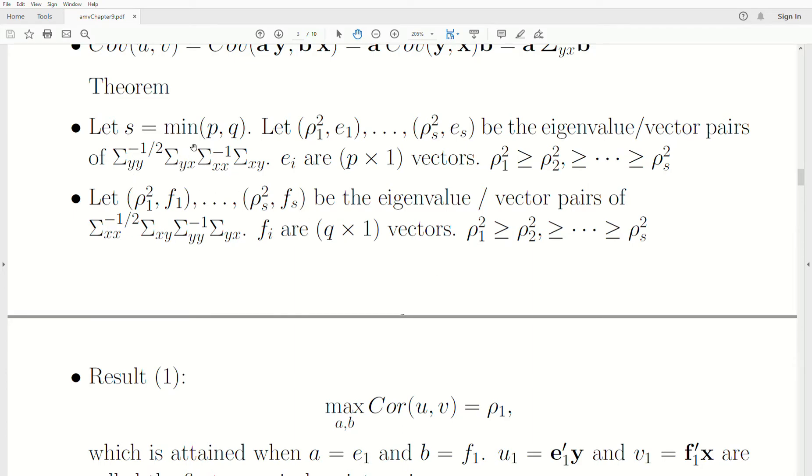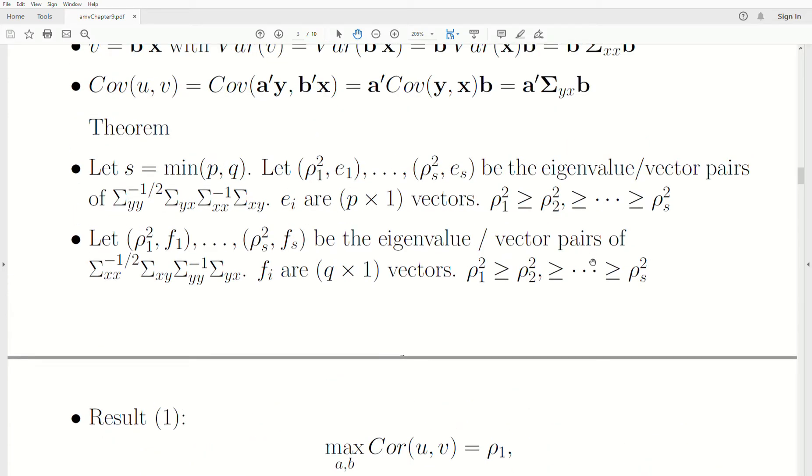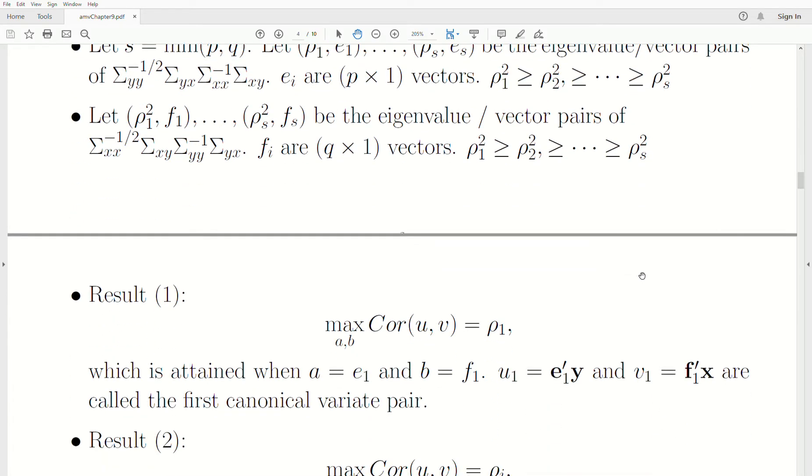And it has to do with, if we call the first product A and the second product B, then this down here is B product A. And so that relationship creates eigenvalues that are the same, or at least the non-zero eigenvalues.